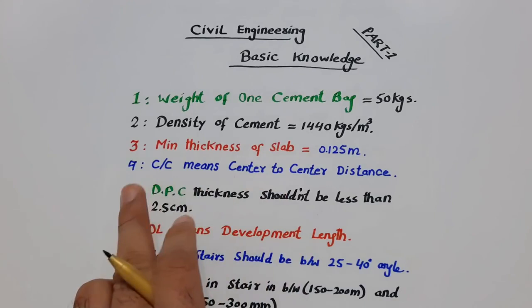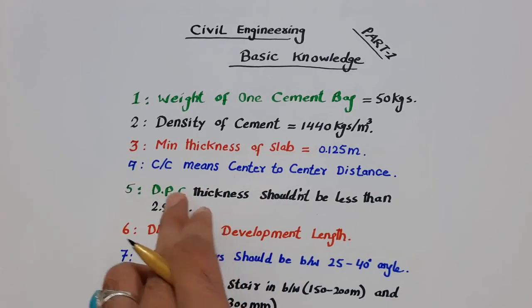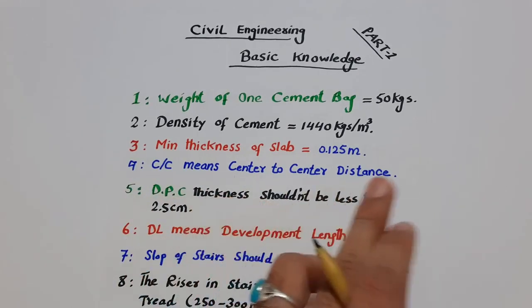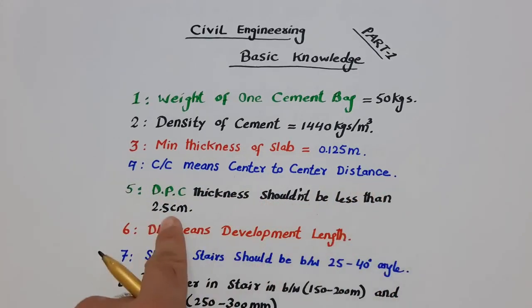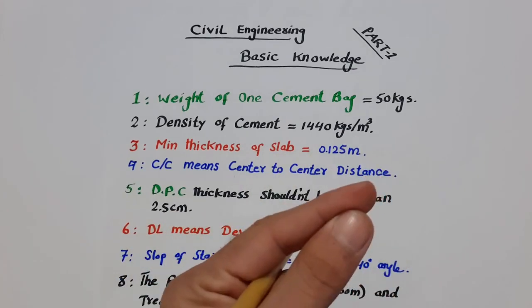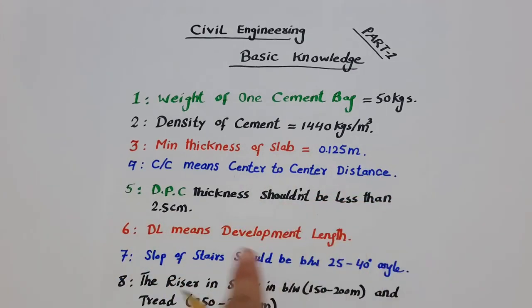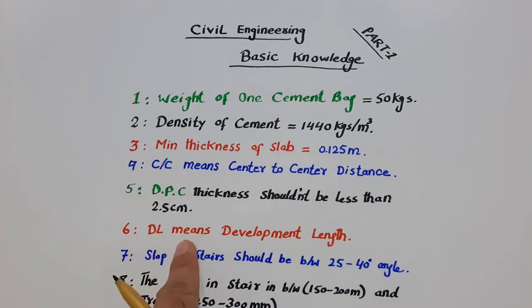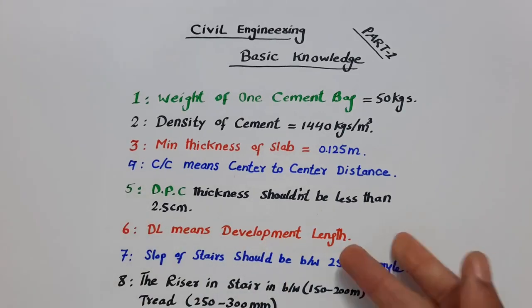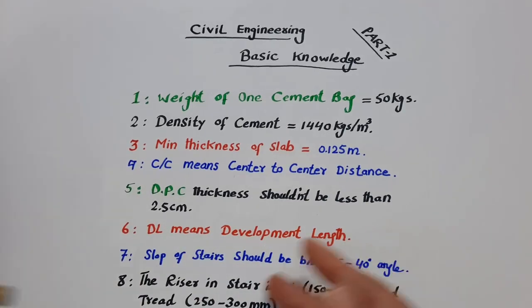The fifth one is the thickness of DPC — damp proof course — which should not be less than 2.5 centimeters or one inch. The sixth one is DL, which means development length.